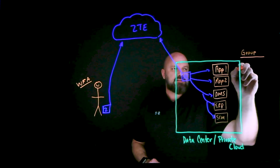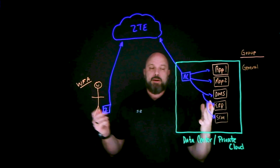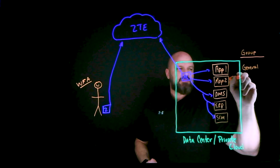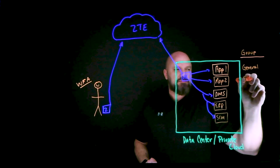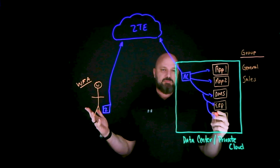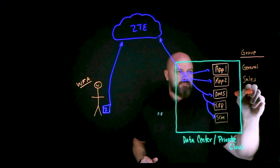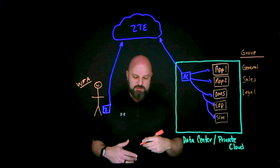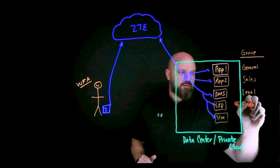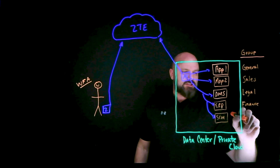Application one should be available to anyone and everyone — that's a general group attribute. Application two is really specific to just sales. The document management system is just the legal team only. The ERP is going to be finance. And last but not least, the supply chain management system is going to be the operations team.